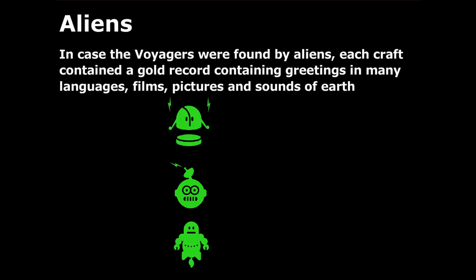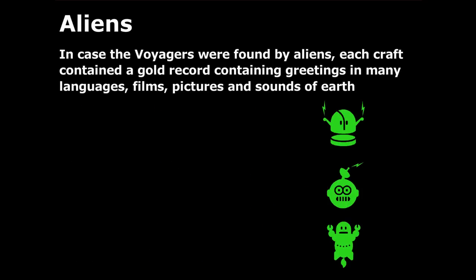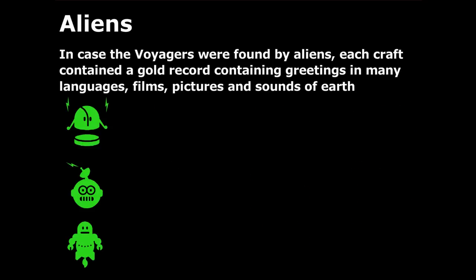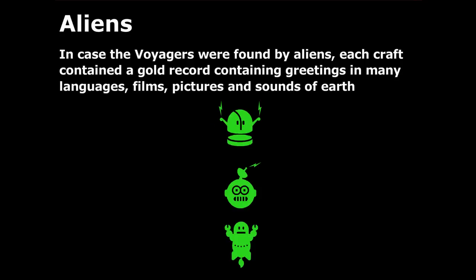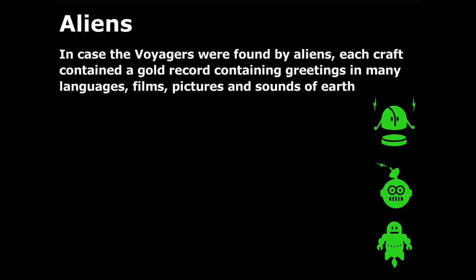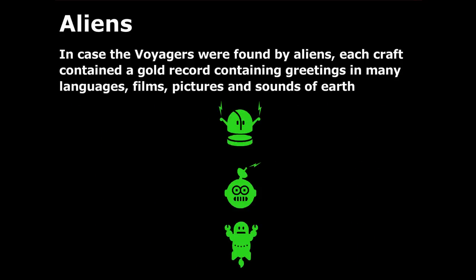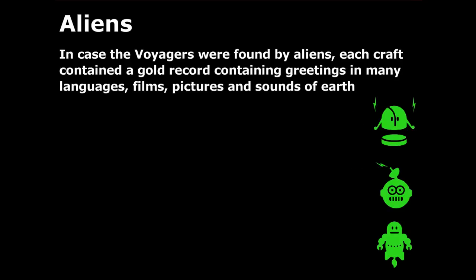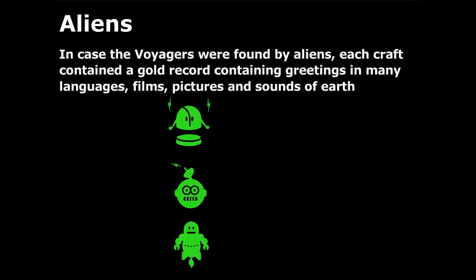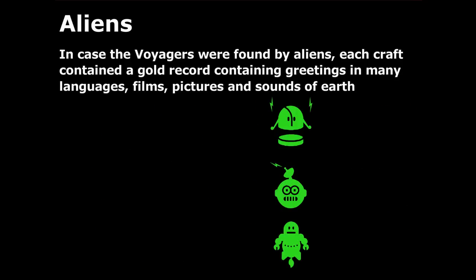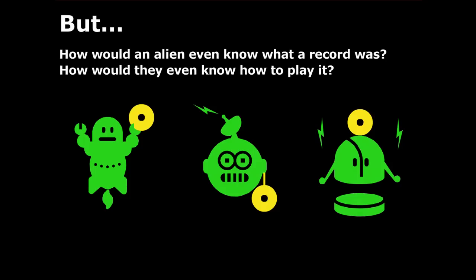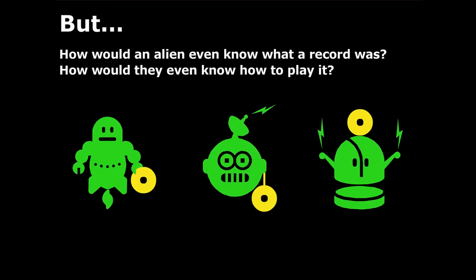In case the Voyager spacecraft were found by aliens, each craft contained a gold record containing greetings in many languages, films, pictures and sounds of Earth. But how would an alien know what a record was? How would they even know how to play it? The answer is metadata.